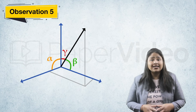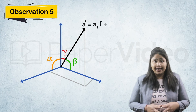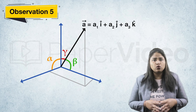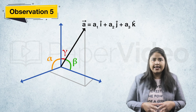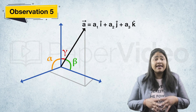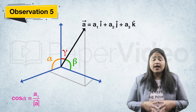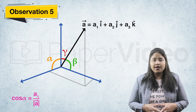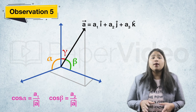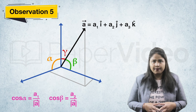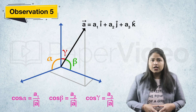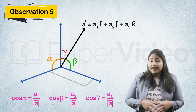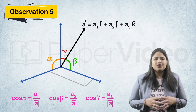According to the fifth observation, if alpha, beta, and gamma are the direction angles of vector A = A1·i + A2·j + A3·k, then its direction cosines are given as: cos alpha = A1 / |A|, cos beta = A2 / |A|, and cos gamma = A3 / |A|.